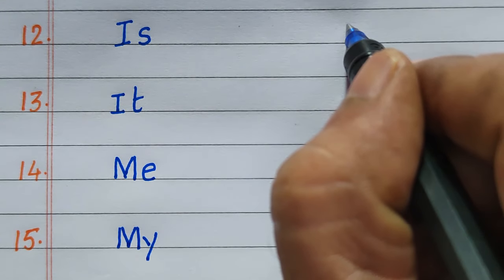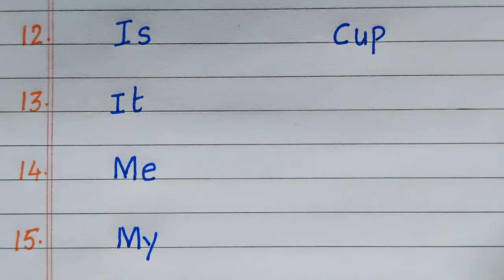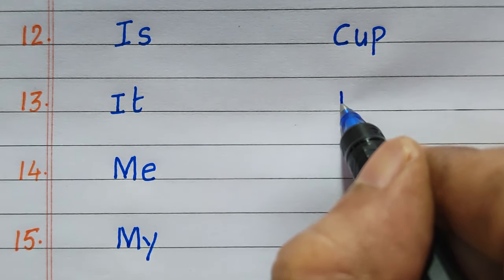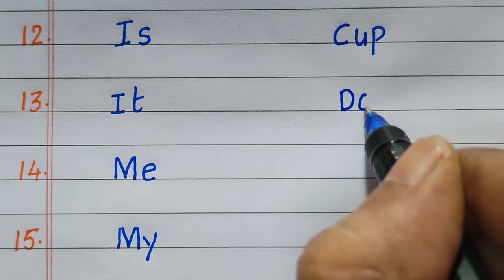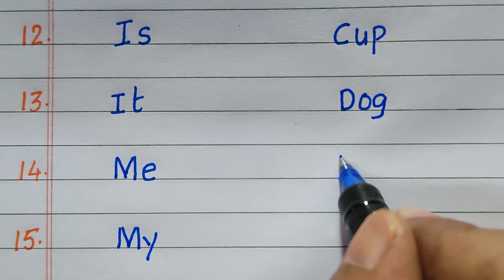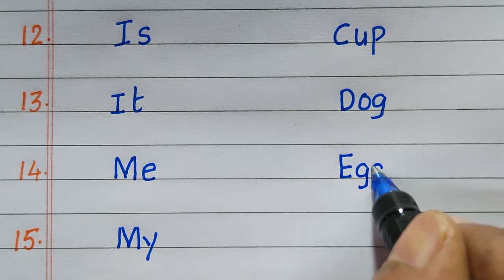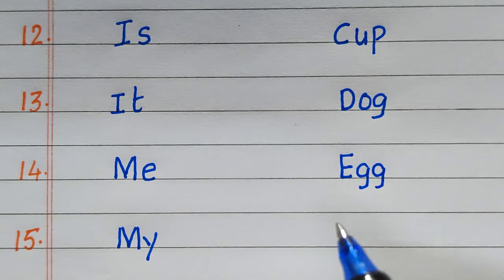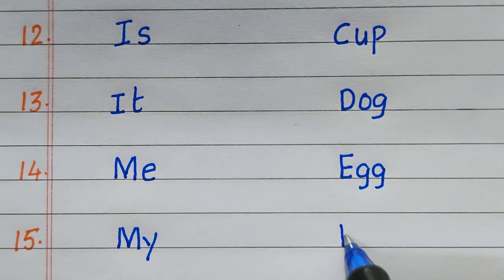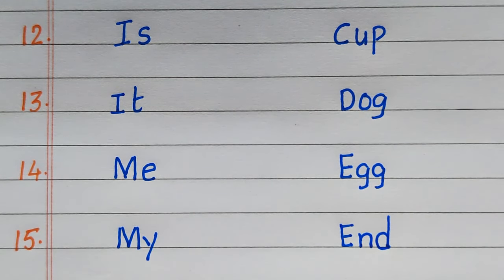Whereas twelfth three-letter word is cup. Thirteenth one, dog. Fourteenth it is egg. Fifteenth, end.